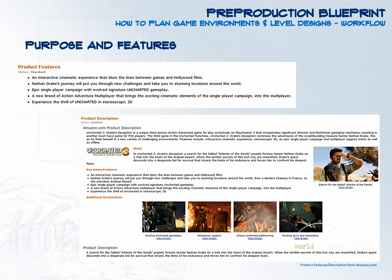A set of features is a list of elements that you want to include inside your environment and map. This list will define how unique and different your environment is and what will make your map stand out from the rest. A great tip is to go to a website like Amazon.com, read product features and descriptions for games — this gives you a clear idea of what a feature set looks like. You want to set the same kind of features for your game environment: what makes it unique and different from anything else out there?